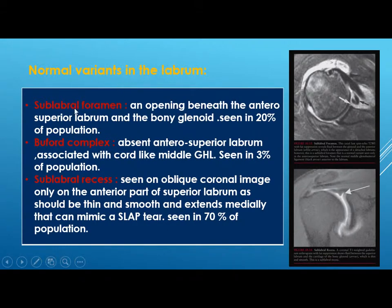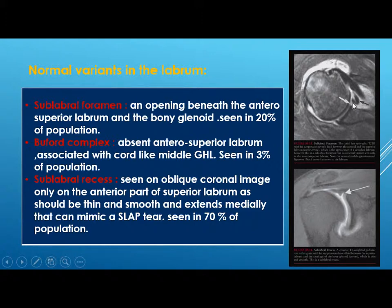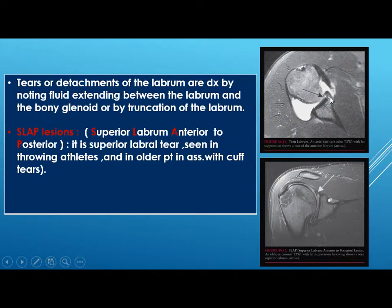Normal labral variants: the sublabral foramen is an opening beneath the anterior superior labrum and the bony glenoid, seen in 20 percent of the population. To differentiate it from a detached labrum: the sublabral foramen shows smooth flowing fluid between the labrum and glenoid, whereas a detached labrum shows very irregular and spotty fluid between the labrum and glenoid.